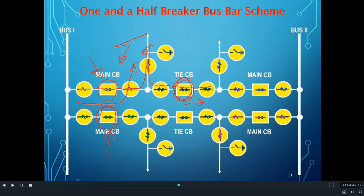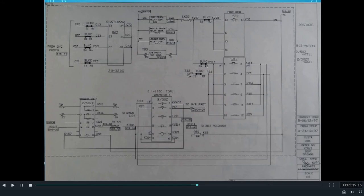Hence, to stop the flow of fault current through the main CB, the main CB of the other feeder will trip. Now we shall consider the second case — non-operation of the TIE CB. During this condition, because of the operation of the main CB, the fault current which was flowing from the main CB side will stop. But the current from the TIE CB side will continue to flow. So, to address that situation, an LBB signal will be generated from the feeder to trip the main CB of the other side feeder. This is how the LBB signals are mapped in the one and a half breaker scheme. This was all about LBB signal mapping in different busbar schemes.